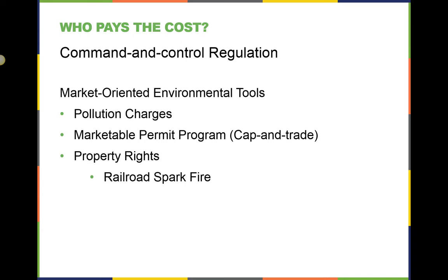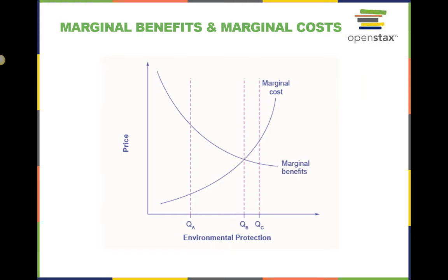The final market-oriented environmental tool is better-defined property rights. This allows infringement on others' property by pollution or another negative externality to be compensated. This is done primarily through the court system, which protects all property rights from damage or infringements. When the quantity of environmental protection is low, so that pollution is extensive, for example at quantity QA here on the graph, there are usually a lot of relatively cheap and easy ways to reduce pollution, and the marginal benefits, or the extra benefits of doing so, are quite high. At QA, it makes sense to allocate more resources to fight pollution.